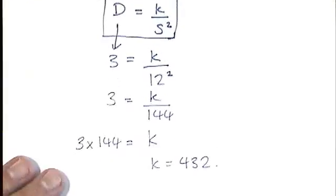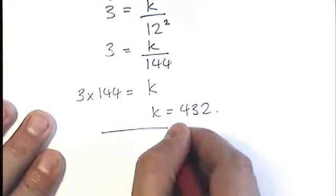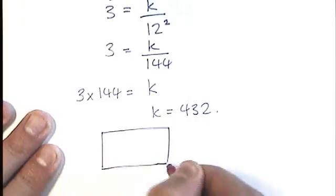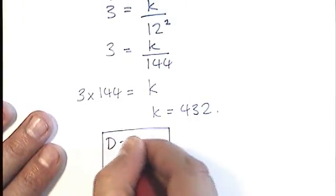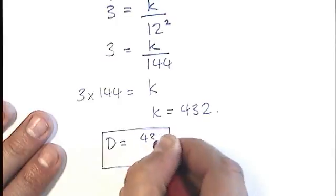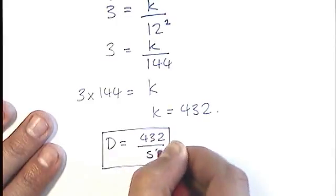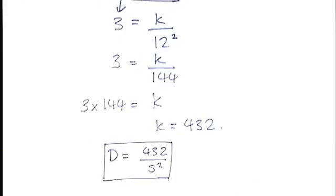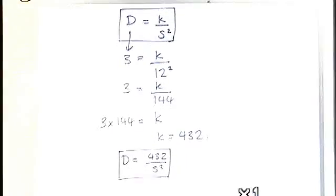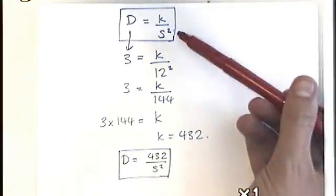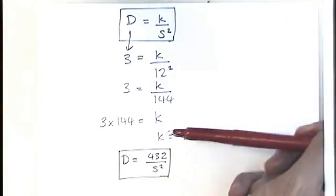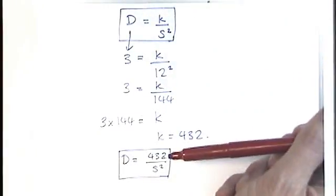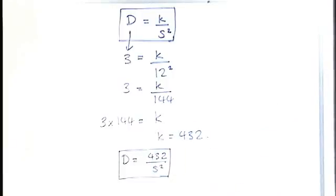So the final step before I can answer the questions A and B is to actually write my formula out again. Remember, it was D equals K over S squared. OK, so let's just have a quick look at that process again. It's just the same as with direct proportion. Start with your general formula, plug in a pair of numbers, work out the value of K, and then use your formula to answer the questions.